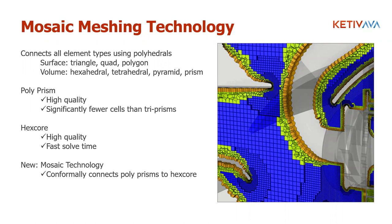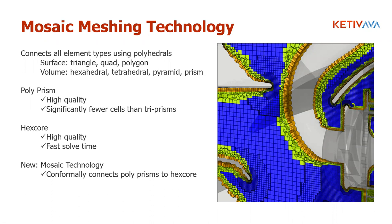Traditionally with tetrahedral cells, you'd use triangular prisms near walls. But because polyhedrals have more faces, polyprisms in the near-wall region effectively reduce cell count. Hex core meshes benefit you in terms of quality and solve time, and all connections made are conformal. Mosaic meshing technology is truly revolutionary — everyone should be leveraging it and getting started with Fluent meshing for their applications.